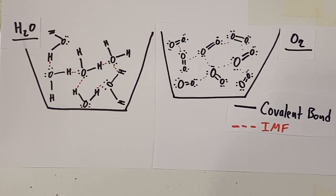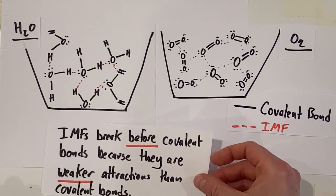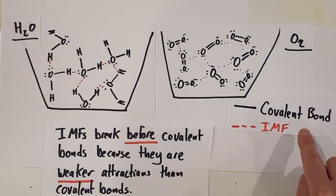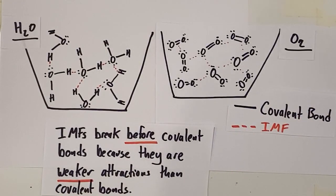Now we know that if something were to boil to go into the gas phase, it's going to be the IMFs that break before the covalent bonds because the IMFs are weaker attractions than the covalent bonds.